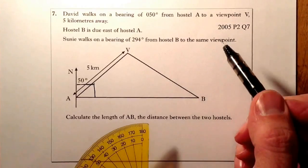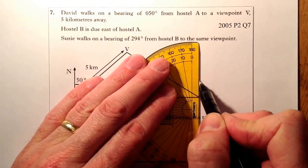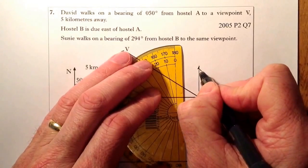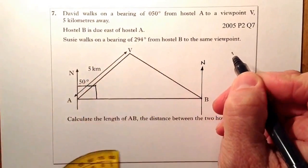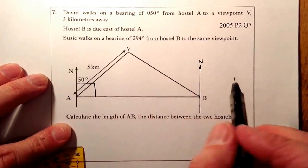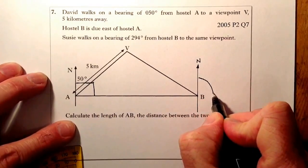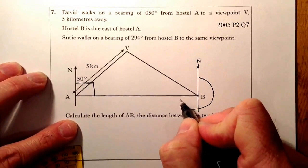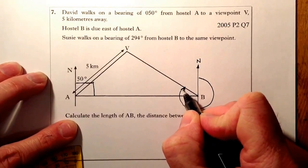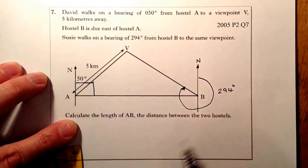So what I'm going to do is I'm going to change this triangular diagram. I'm going to put a north line in here. So that's going to be north. And I know that Susie walks on a bearing of 294 degrees from Hostel B, always measured from this way here. So from there, all the way round to there, that's going to be 294 degrees.